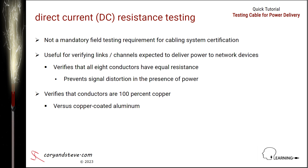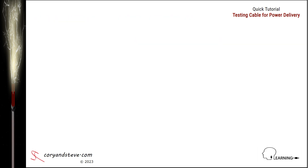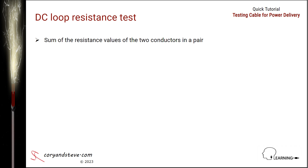Next is the first of three DC resistance tests that can be performed on network cabling links or channels to verify power delivery capability. The DC loop resistance test sums up the individual resistance values of the two conductors in a pair after they're looped by the test instrument at one end of the link or channel. Note that loop resistance values increase proportionally as the length of the cable link or channel increases.